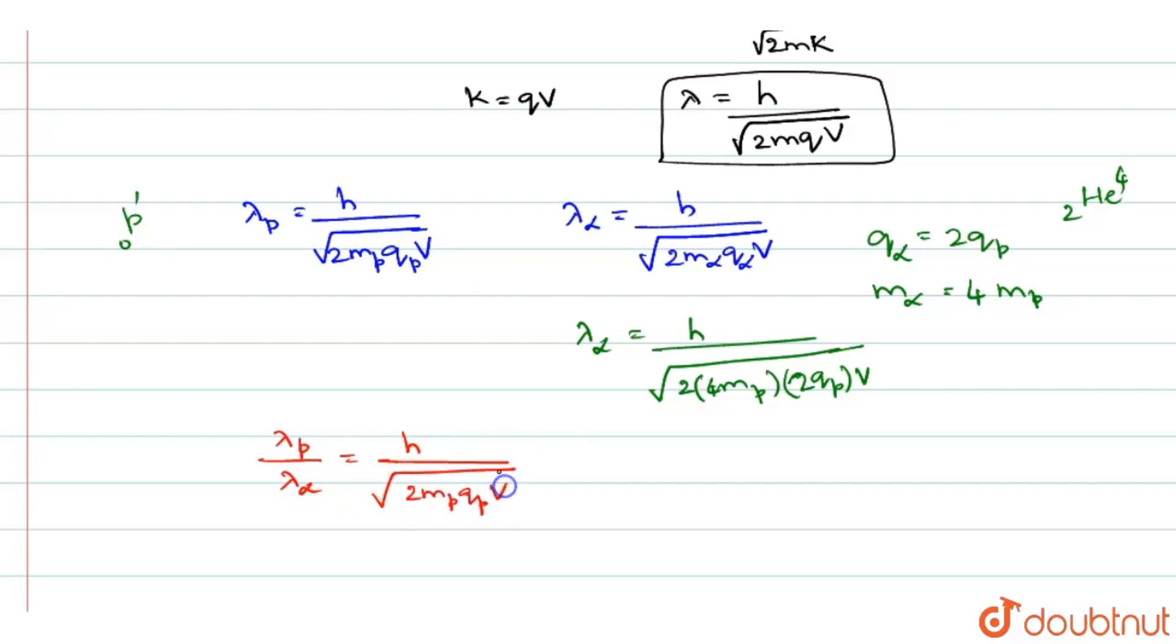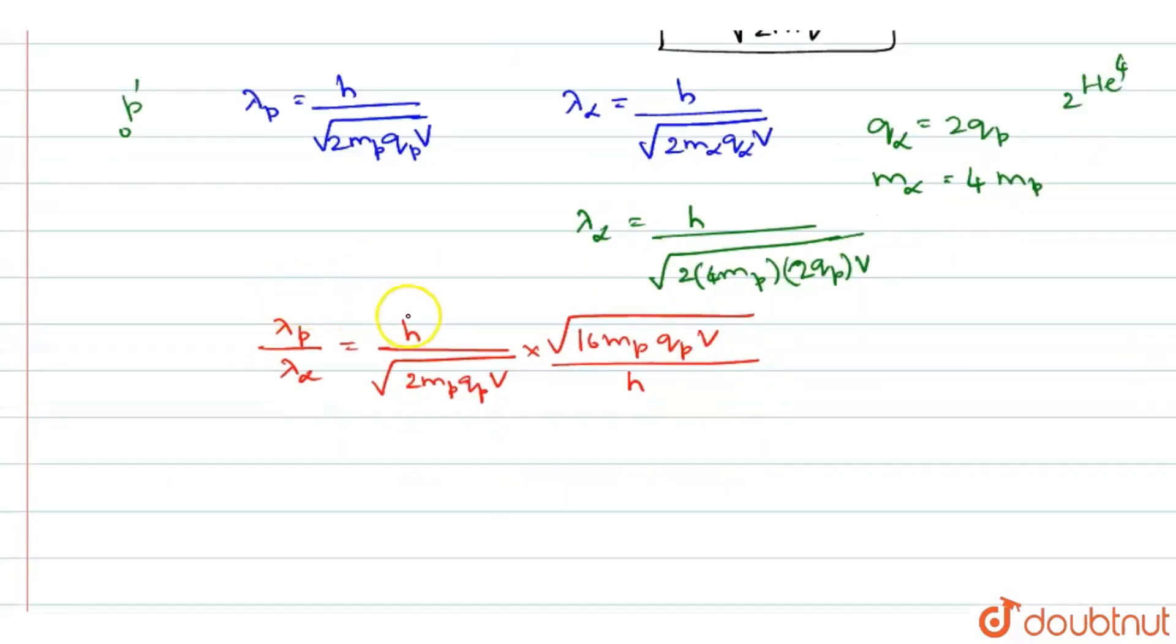Lambda p by lambda alpha is equal to h by root 2mp qp V into root of 16mp qp V divided by h.